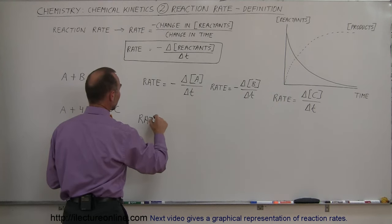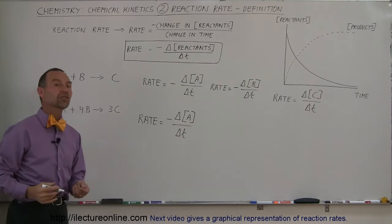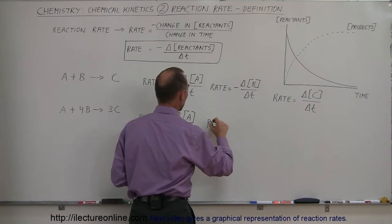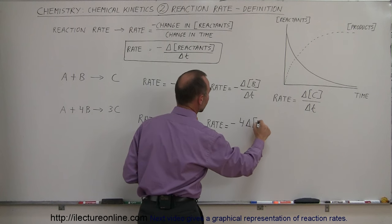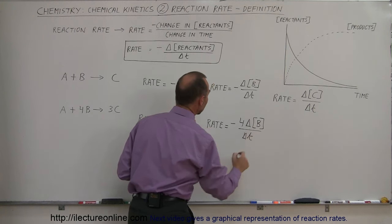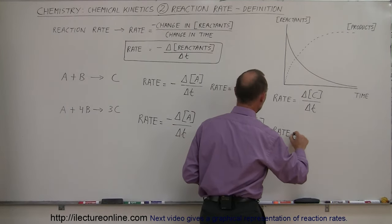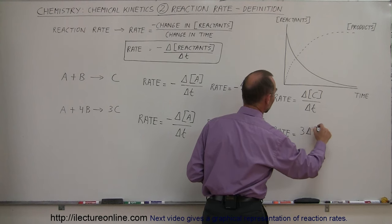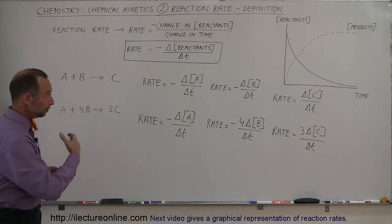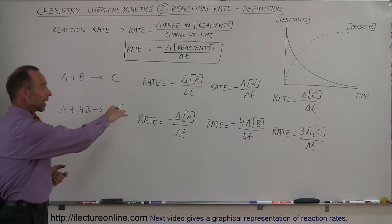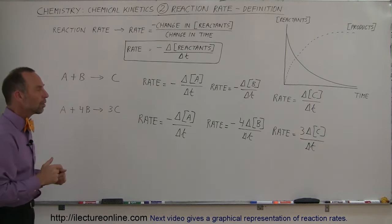We can say that the rate of the second reaction can be expressed as minus the change in the concentration of A with respect to the change in time. In the case of B, the rate is equal to minus four times the change in the concentration of B divided by the change in time. And if three of the products are being produced for every one reaction, then the rate can also be expressed as positive three times the change in the concentration of C divided by the change in time. That's how we mathematically indicate the reaction rate using either products or reactants, adjusting for stoichiometric coefficients.